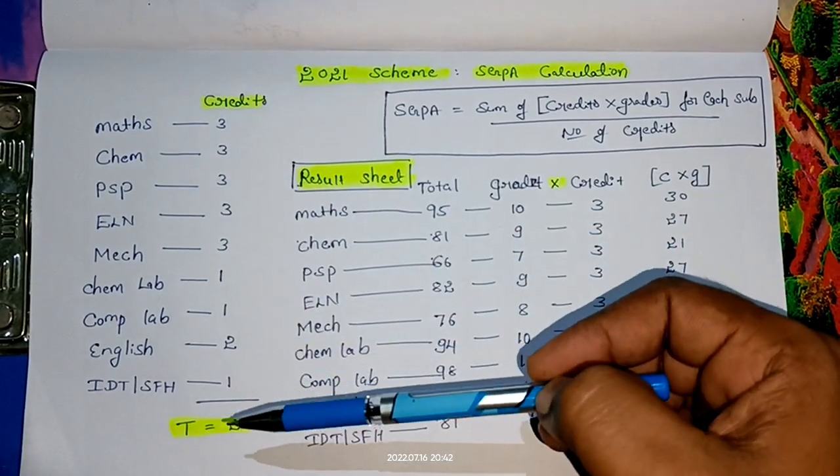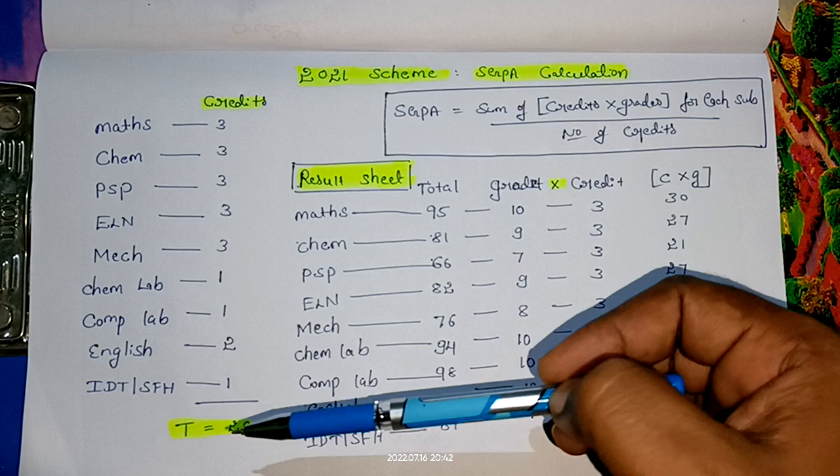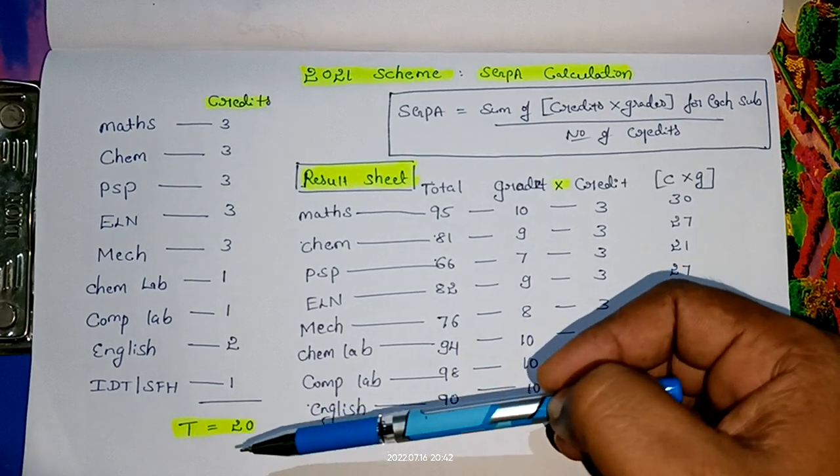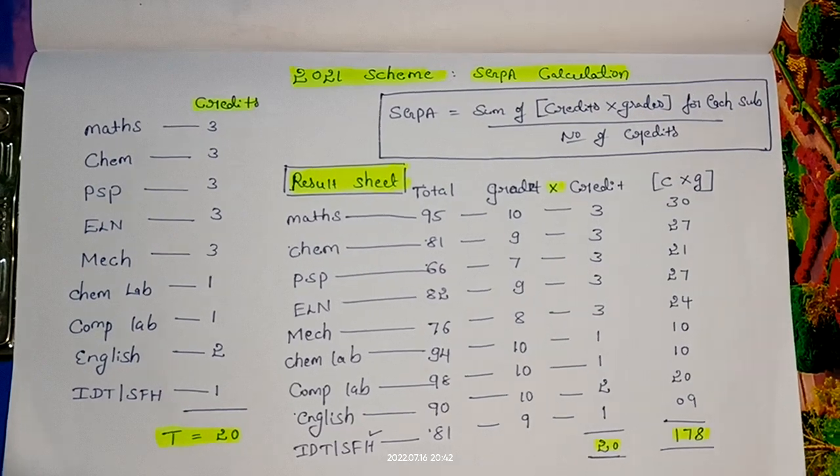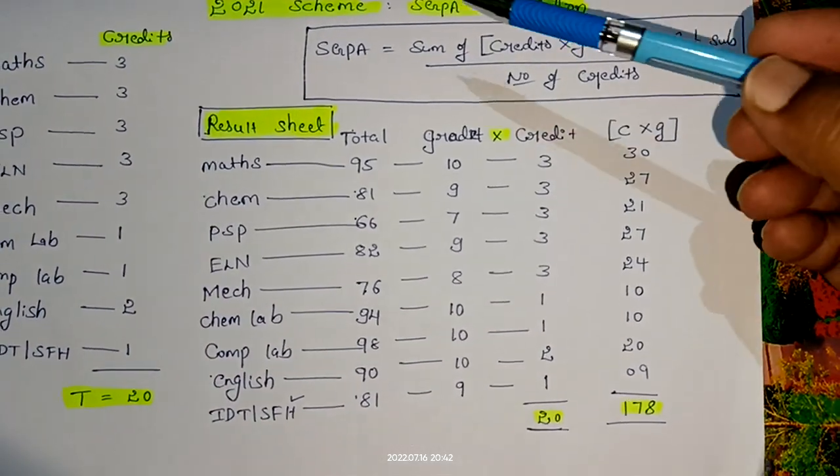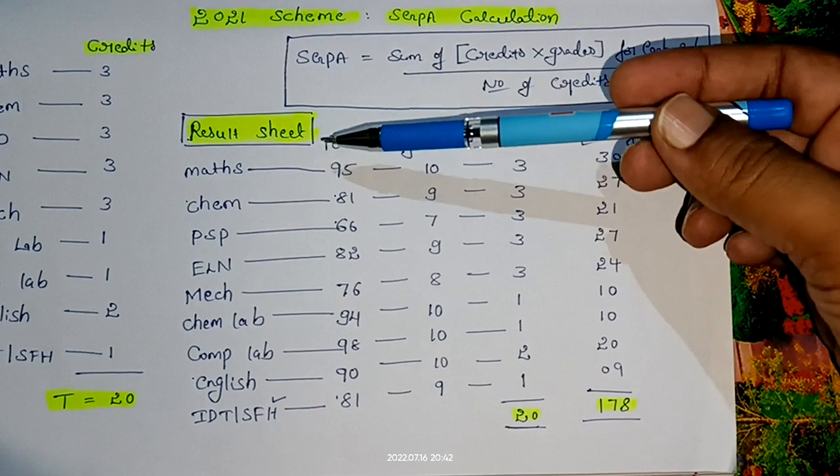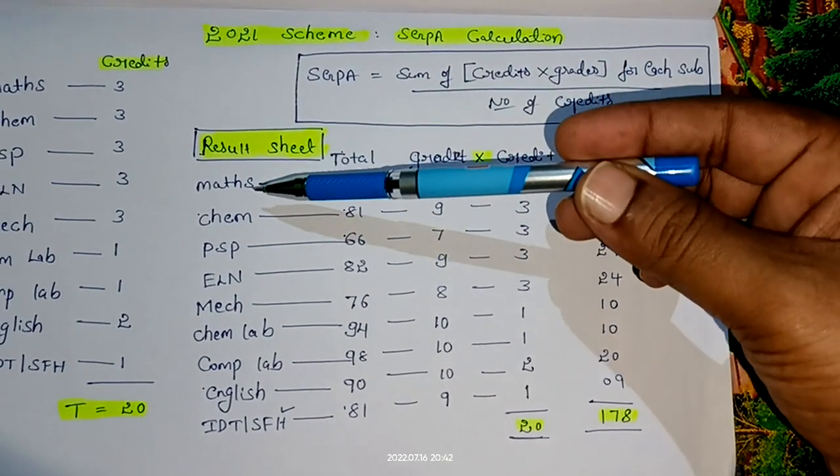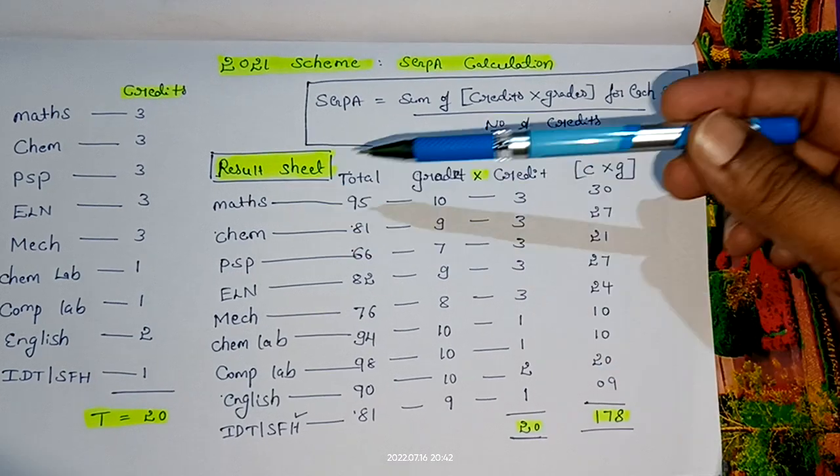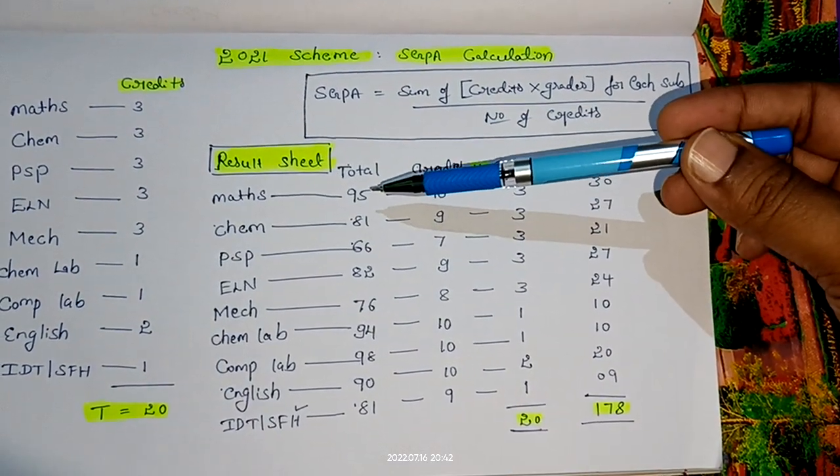We should add all these credits. The total number of credits in Chemistry cycle or Physics cycle is the same—that is 20. Now, you should see your result sheet.